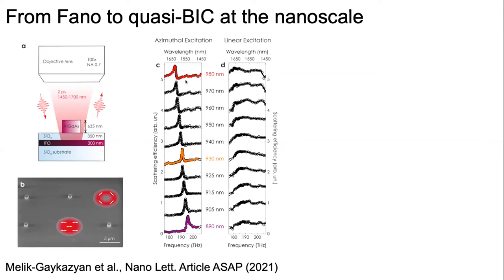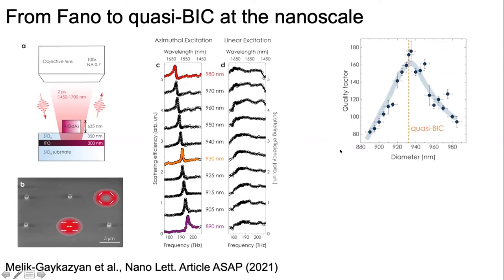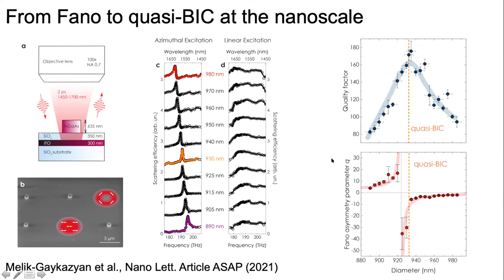In the case of azimuthal excitation, we can see the transformation of the line and its shape. In contrast, when we excited the particle by linear polarization, we could not see any sharp resonances.